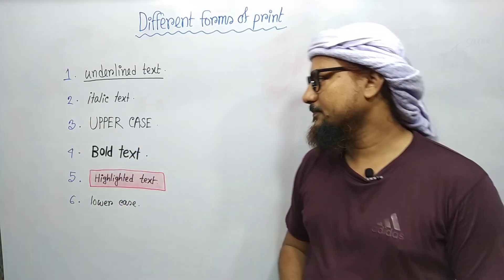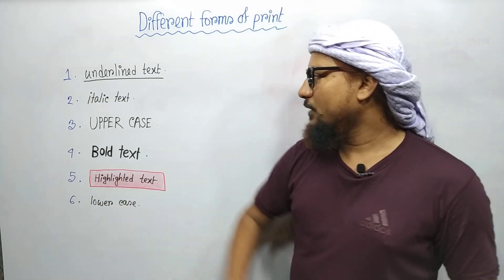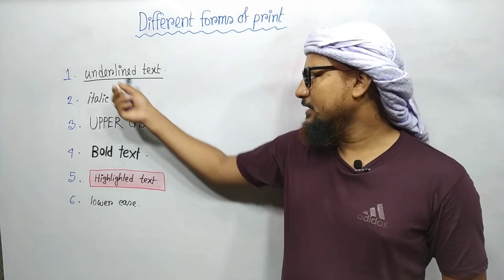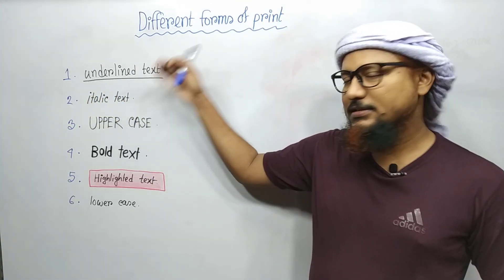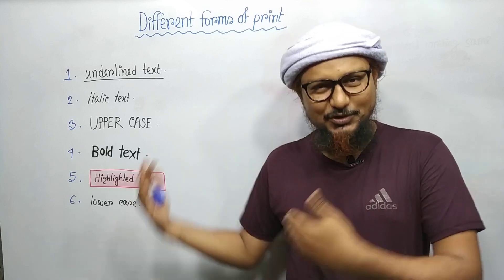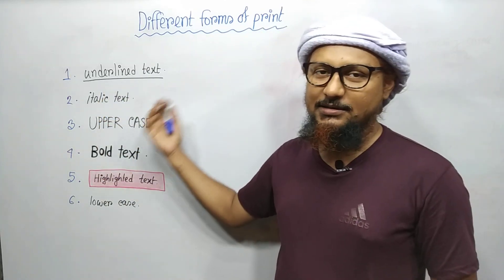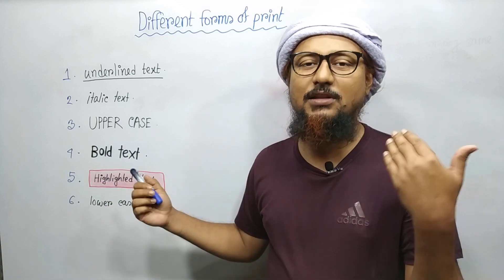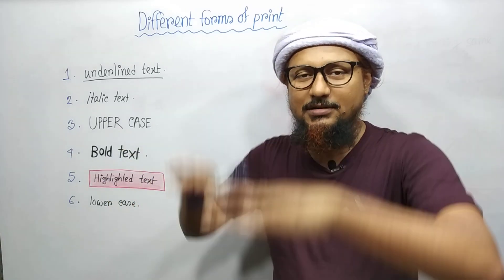Number one: underlined text. When some texts have a line underneath, that is called underlined text. This text has been underlined, or this text has been given a line under it.